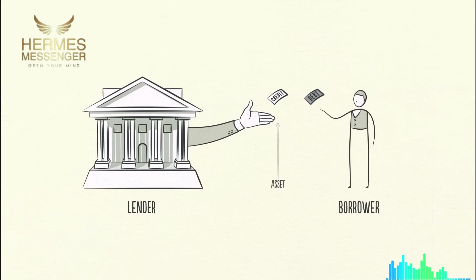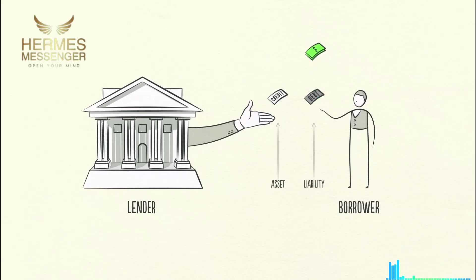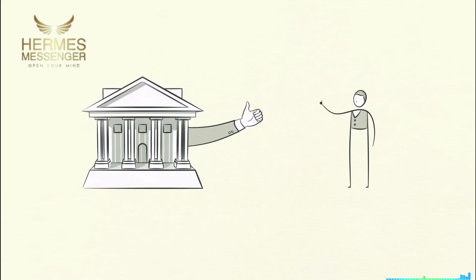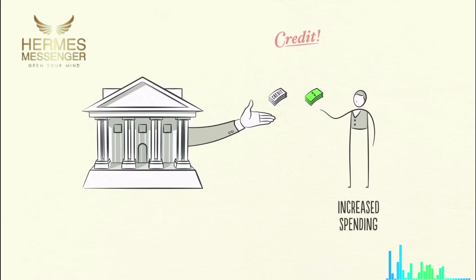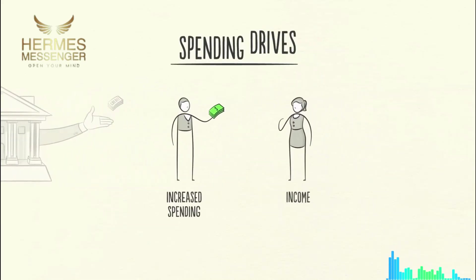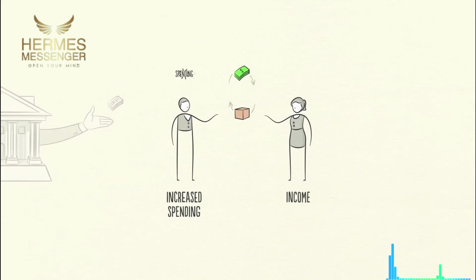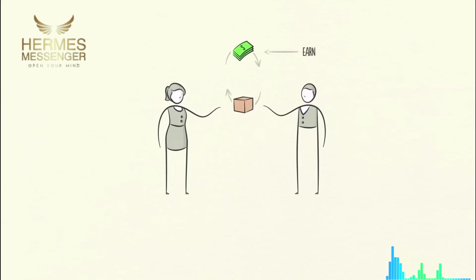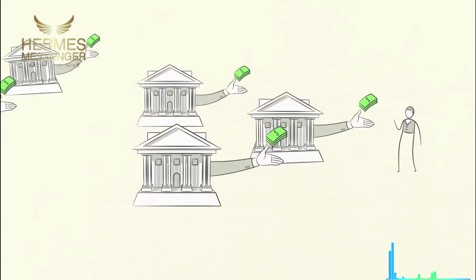Debt is both an asset to the lender and a liability to the borrower. In the future, when the borrower repays the loan plus interest, the asset and the liability disappear and the transaction is settled. So why is credit so important? Because when a borrower receives credit, he is able to increase his spending. And spending drives the economy. This is because one person's spending is another person's income. Every dollar you spend, someone else earns. And every dollar you earn, someone else has spent. So when you spend more, someone else earns more.